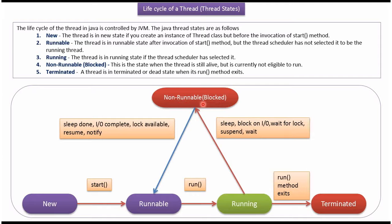From the non-runnable state, the thread can go back to the runnable state. Here you can see the reasons a non-runnable thread becomes runnable: sleep done, IO complete, lock available, resume, and notify.